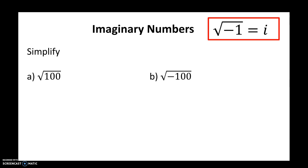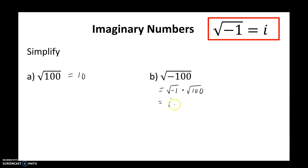In order to write complex numbers, we need to recall imaginary numbers. Imaginary numbers were developed to be able to take the square root of a negative. Recall from Algebra 2, the square root of negative 1 is equal to i. To simplify the square root of a negative number, you look at it as the square root of negative 1 times the square root of 100. The square root of negative 1 is our imaginary number i, and the square root of 100 is 10, so we write that as 10i.